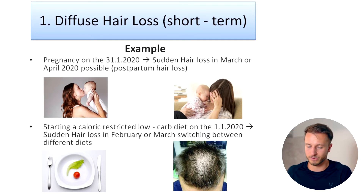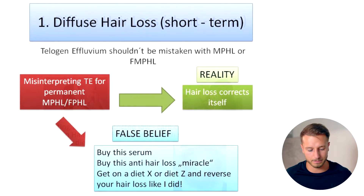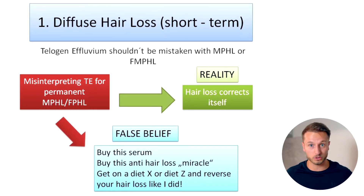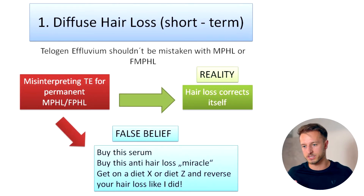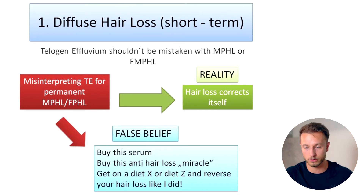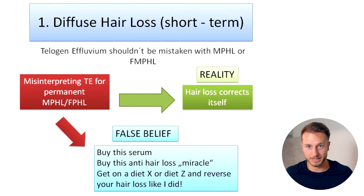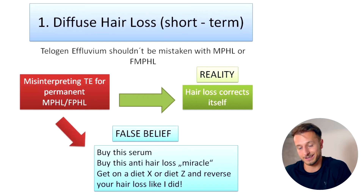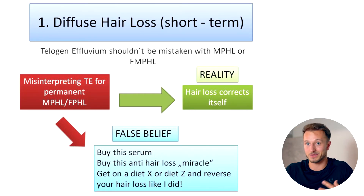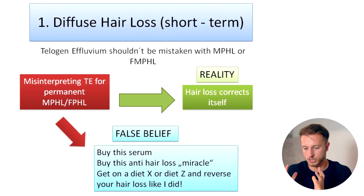So again, this is a very short-term, reversible type of hair loss. Unfortunately I see many people online going through that hair loss and misusing it to sell different treatments like natural remedies that don't work. People fall for it because they see someone experiencing a massive shed, then that person claims a special serum made their hair grow back. Of course, someone who doesn't know about hair loss will believe that — but in reality it was just self-correcting telogen effluvium. So be aware of that.